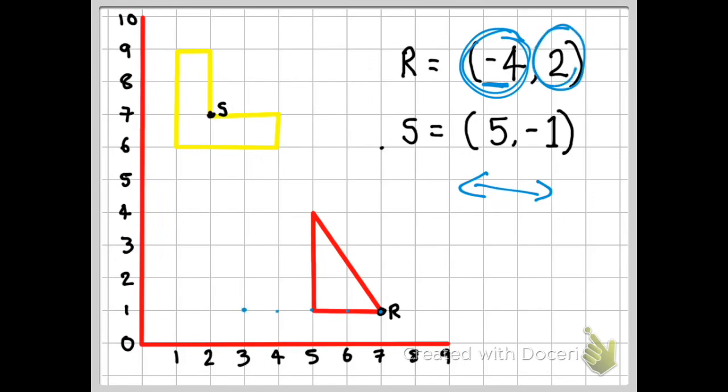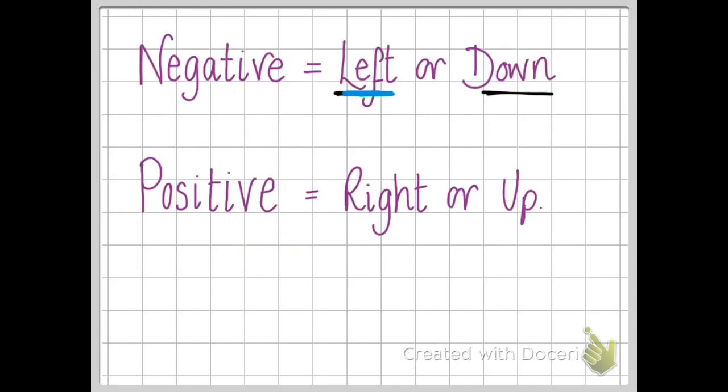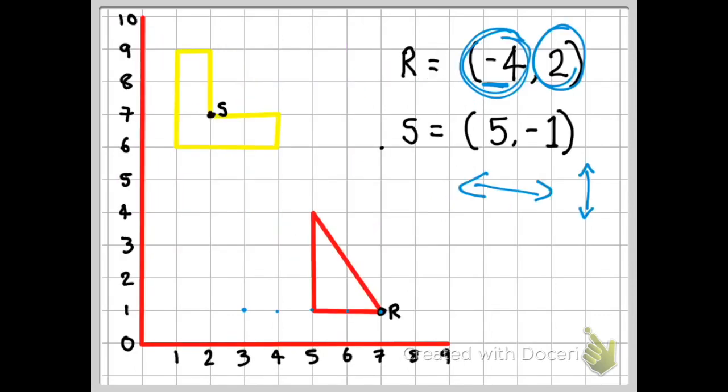And the second number is a positive number this time. And the second number, don't forget, decides if we go up or down. Now, because it's a positive number, I'm going to be going up this time. So I'm going to go up two places. One, two. So I can tell you now that R is in that position.